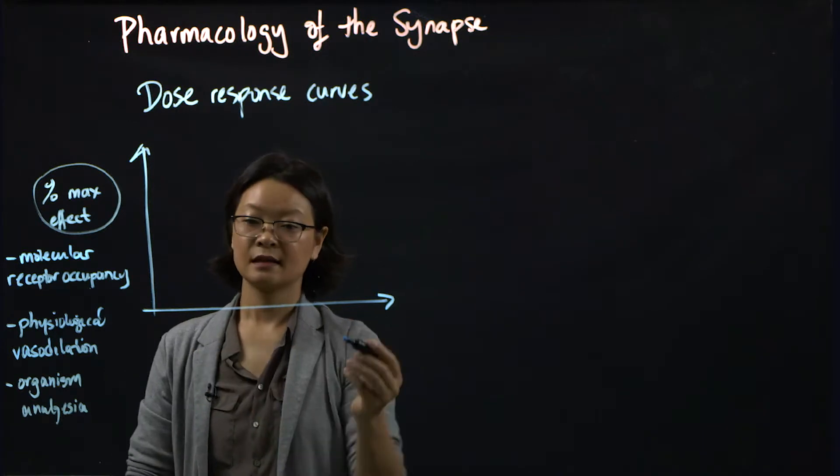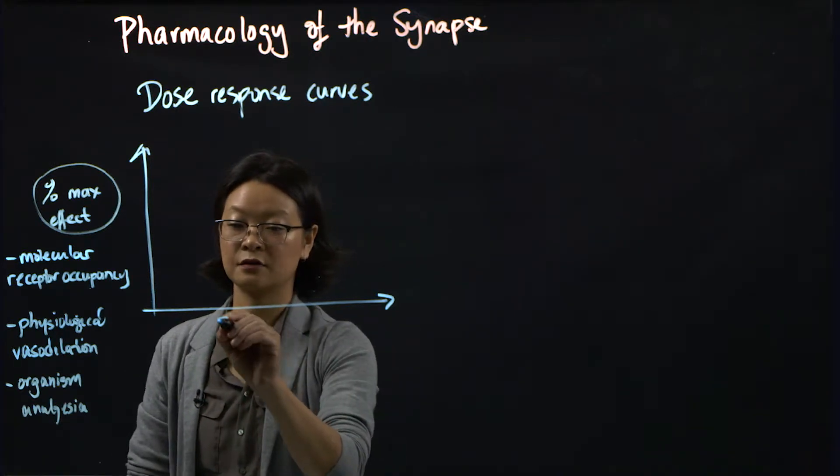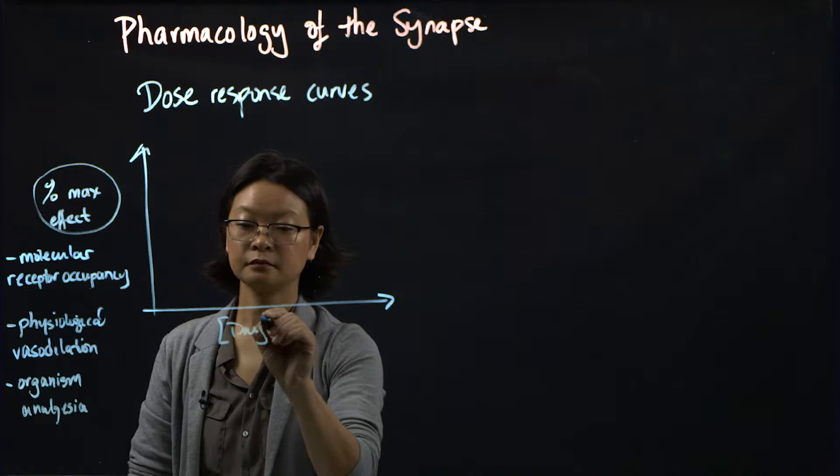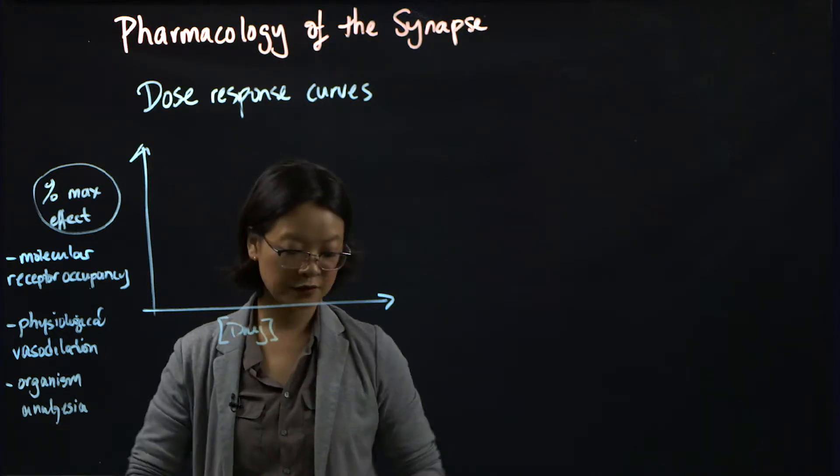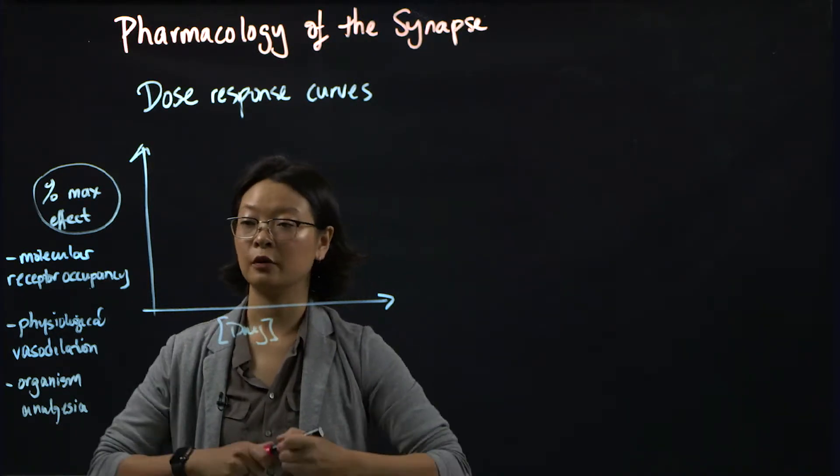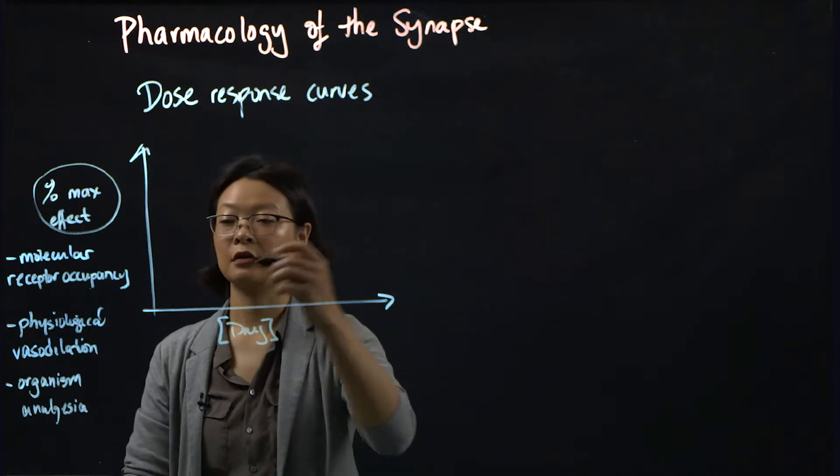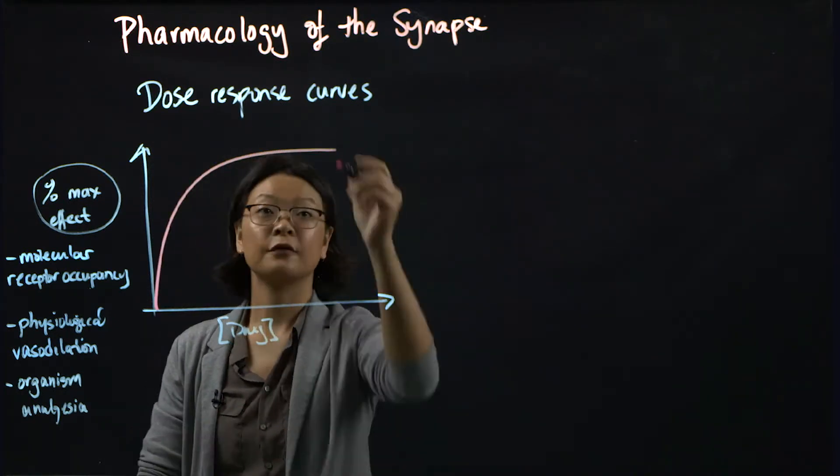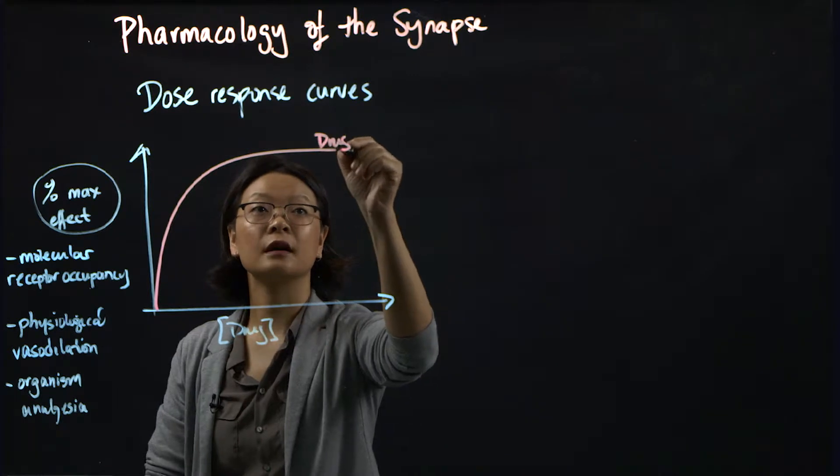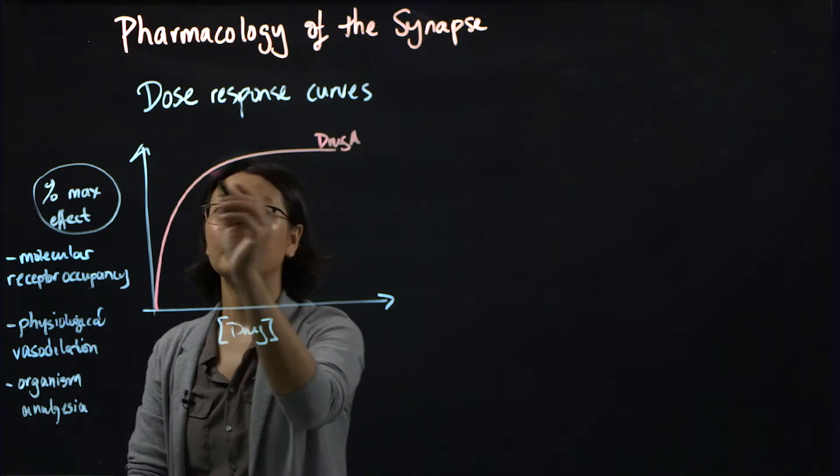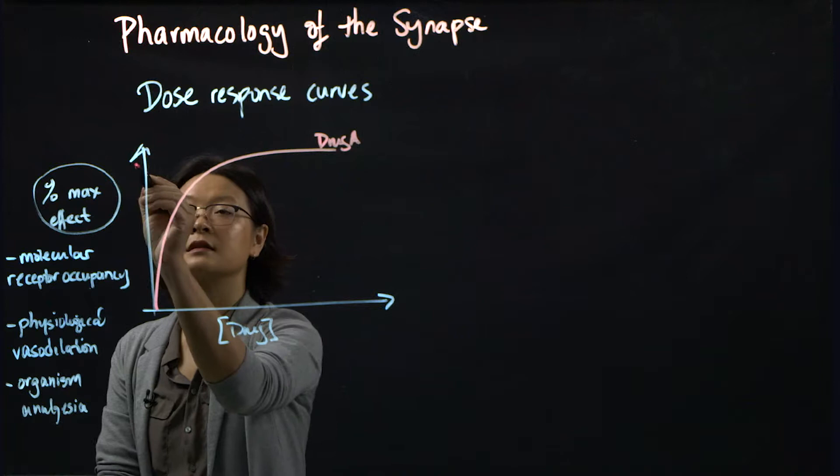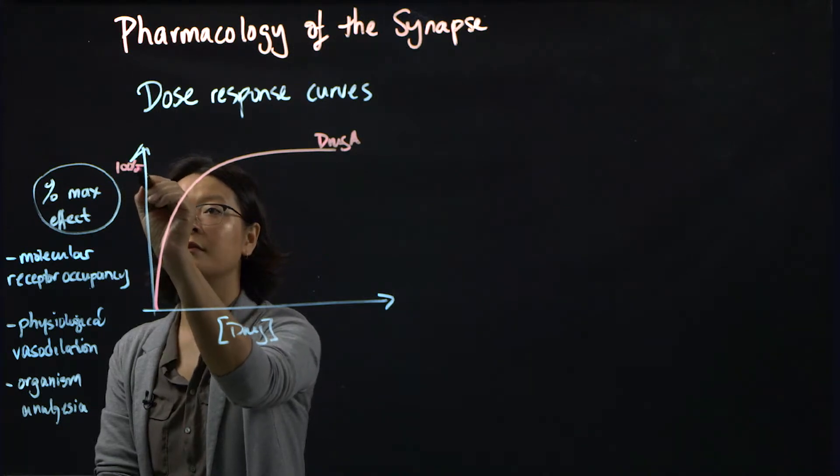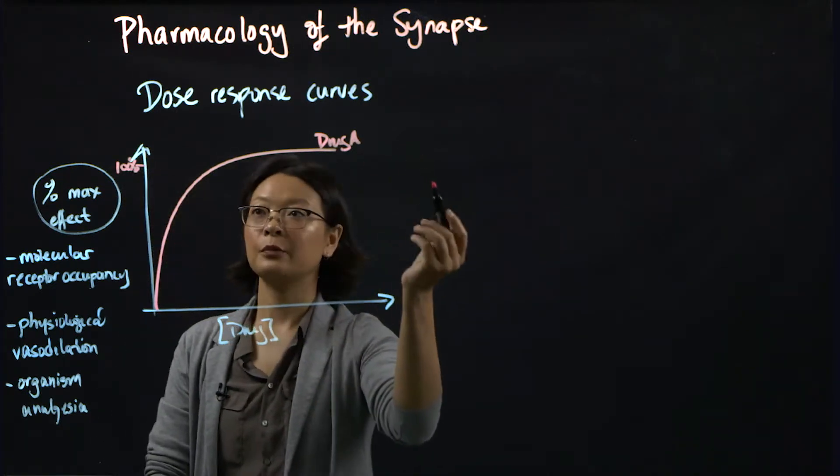So percent max effect can pertain to a lot of different things. On the x-axis here, you have the concentration of your drug. And most biological effects will produce hyperbolic curves, such like this. So if I call this the effect of drug A, and then up here this is 100 percent max effect, there's a couple of things to note.